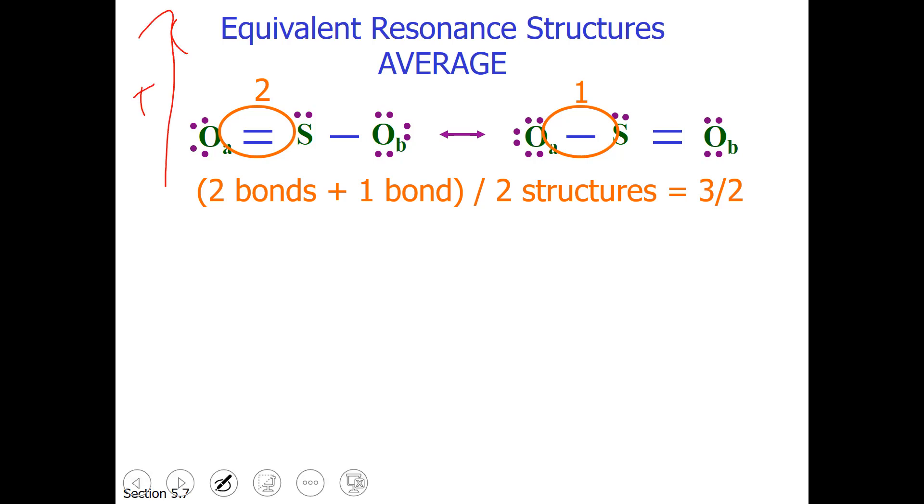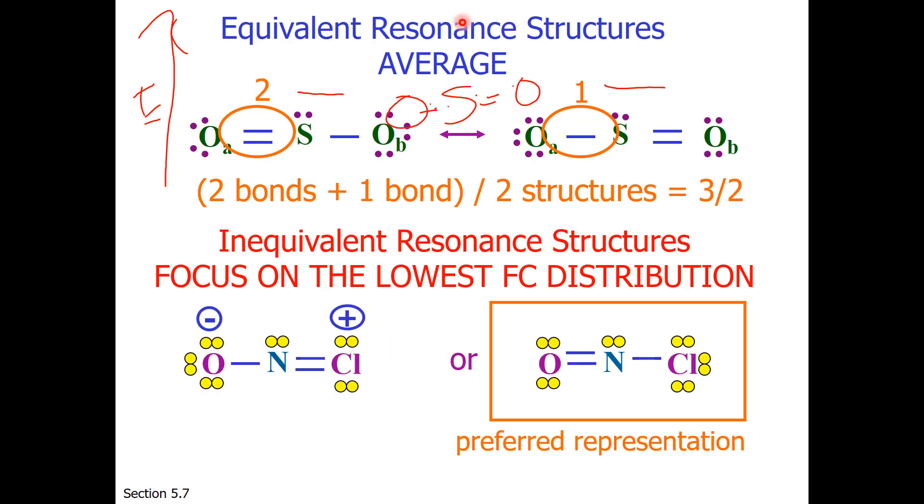So for this structure where we have equivalent resonance structures, if I write an energy diagram here, both structures are at the same energy level. So our best representation of this structure is where the sulfur-oxygen double bond is smeared out between the three atoms. So for equivalent resonance structures, average. For in-equivalent resonance structures, focus on the one with the lowest formal charge distribution. Try to get to all zeros. And then pick the one preferred representation for your bond order.